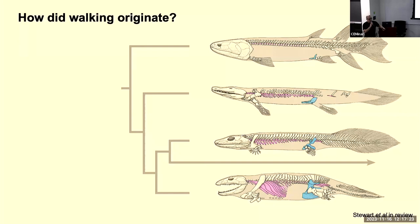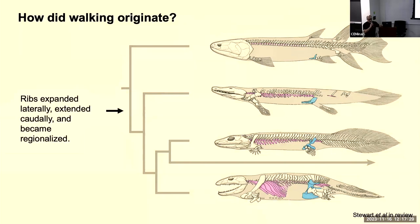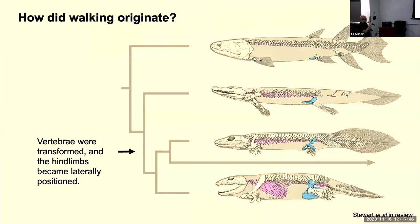So what does that tell us about walking? We now have a more resolved anatomical series of steps: first we see transitions to the ribs — they expand laterally, extend posteriorly behind the pelvis into the tail, and become regionalized with a sacral module allowing a ligamentous connection to the pelvic fins. Later in tetrapod phylogeny approaching the crown, we see specialization of neural arches and vertebrae themselves. We've been able to separate those components, allowing reconsideration of the mechanics of these animals.